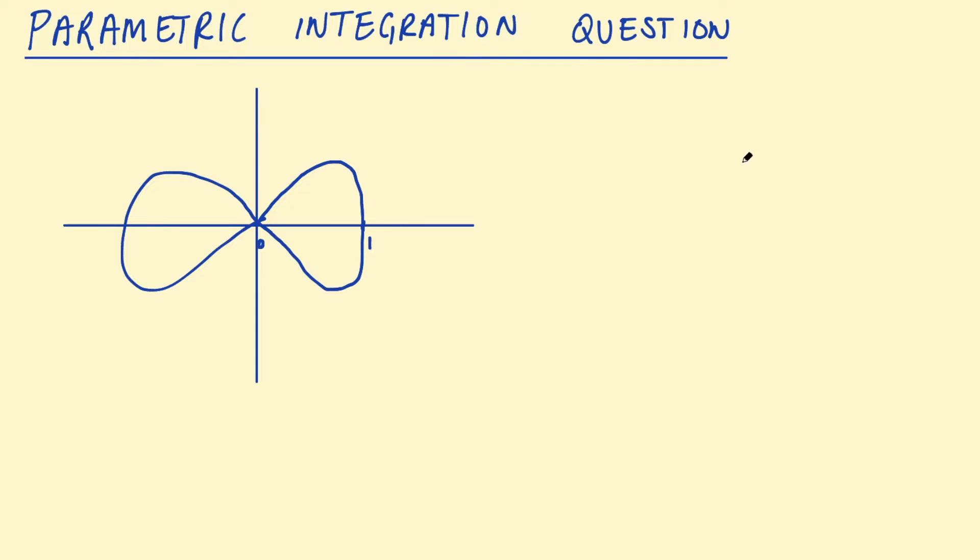And to answer this let me draw a function, some random cubic function. Okay so something like this, that's just some random cubic. Again I don't know what the function would be but think about what happens if for example we integrated from 0 to let's say this was 3. From 0 to 3.